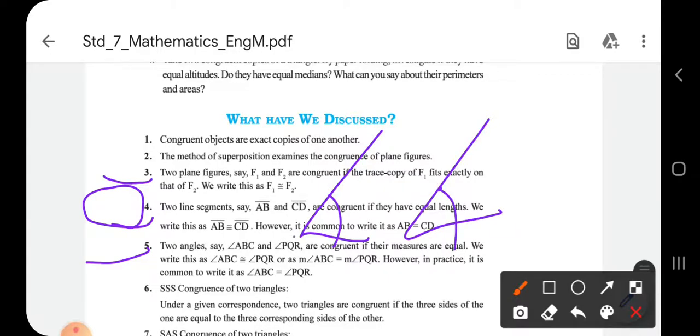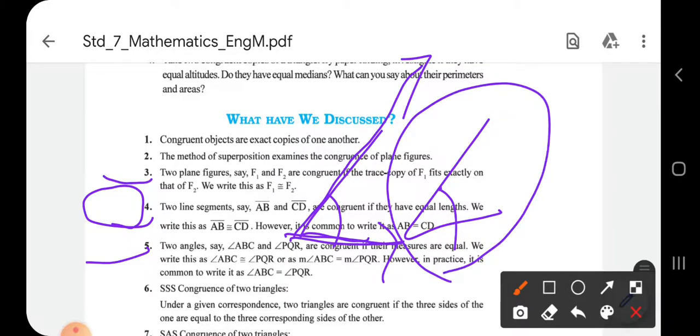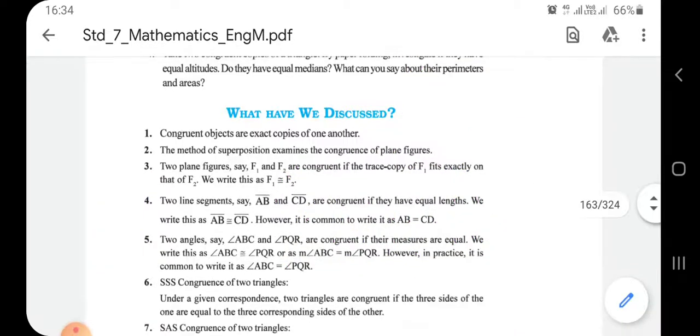Two angles are said to be congruent when the measurement of both angles are the same. If the arms of one angle are greater than the arms of another angle, they can still be congruent because you have to see their angles only, not the length of their arms.